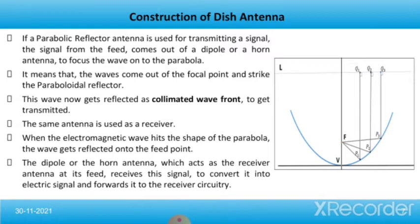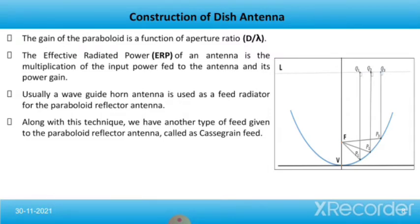The same antenna is also used as a receiver. When the electromagnetic wave hits the parabolic shape, the wave gets reflected onto the feed point. The dipole or horn antenna at the feed receives this signal, converts it into an electric signal, and forwards it to the receiver circuitry. The gain of the parabola is a function of the aperture ratio d/λ. The effective radiated power (ERP) of an antenna is the multiplication of the input power fed to the antenna and its power gain. Usually a waveguide horn antenna is used as a feed radiator for the parabolic reflector antenna.